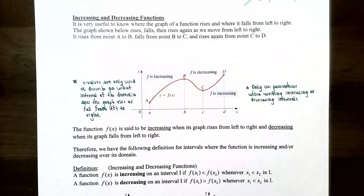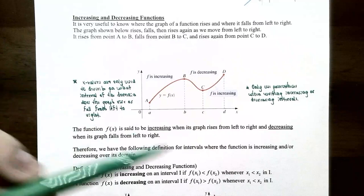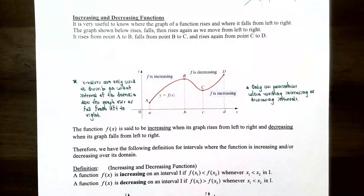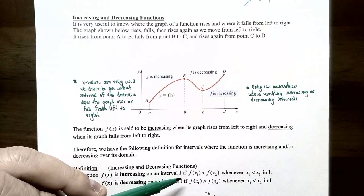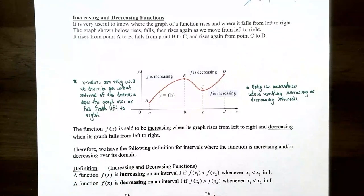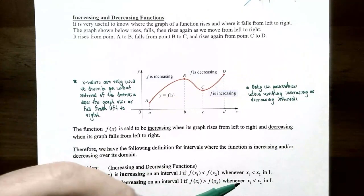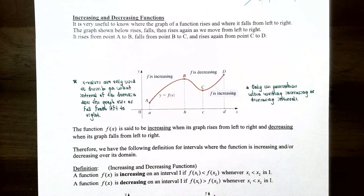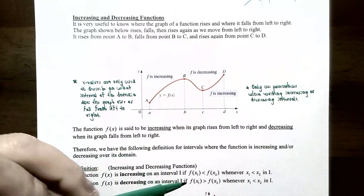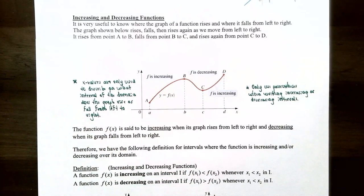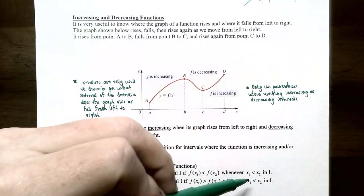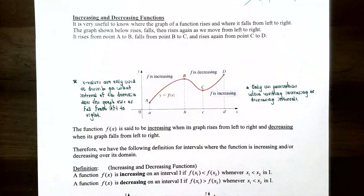The function f(x) is said to be increasing when the graph is rising from left to right, and decreasing whenever the graph is falling from left to right. Formally, a function f(x) is increasing on an interval I if f(x₁) is less than f(x₂) whenever x₁ is less than x₂ in that interval. That means x₁ is to the left of x₂, so the y value at x₁ is below the y value at x₂. If your y values increase as you go to the right from x₁ to x₂, then the function is increasing on that interval.